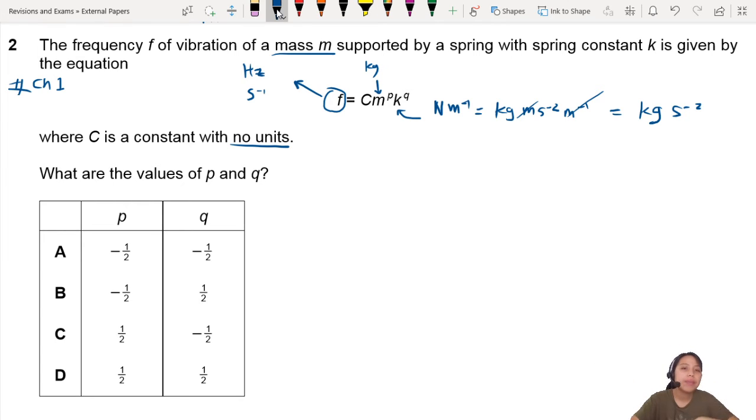Now let's put it all together. If this is a legit equation, the left-hand side unit should equal the right-hand side units. So let's compare the units. On the left-hand side, what do we have? Just s⁻¹. On the right-hand side, what do we have? C is no units, m is kg, but to the power of p.